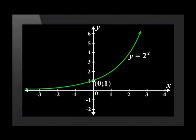Here is the exponential function y = 2^x. It has an asymptote of y = 0 and a y-intercept of (0,1). It is also an increasing function.